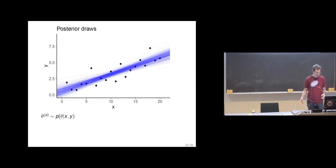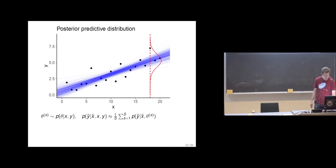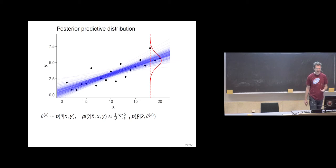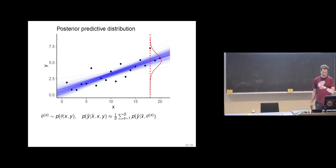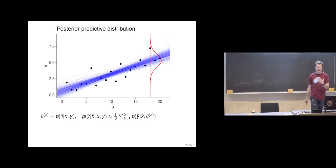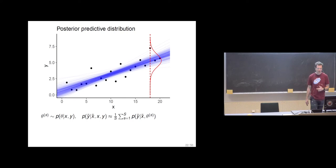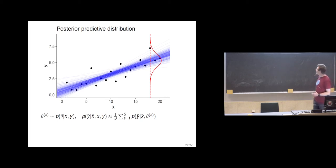This is easy to do with Stan via the posterior draws. We can also compute this predictive density: y-tilde given x-tilde and theta-s. In this specific example it would be a Gaussian distribution, and theta-s would be the intercept, slope, and sigma for the Gaussian. From those we can compute the parameters given a certain x value, and then from each Gaussian we can compute the density. Taking the empirical average over posterior draws, we integrate approximately out these thetas to get the posterior predictive density p(ỹ | x̃, observed data).